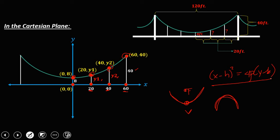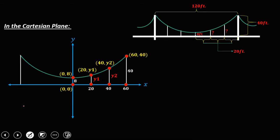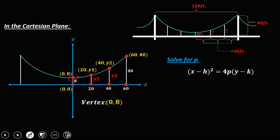First, we solve for P. The vertex of our parabola is at (0, 8), so H = 0 and K = 8.